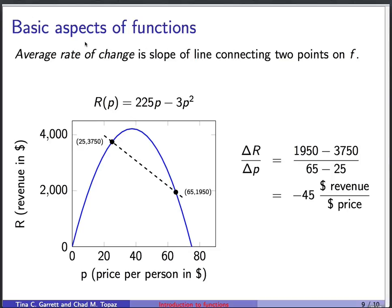Another useful piece of terminology is the average rate of change. And the average rate of change is just the slope of the line connecting two points on f. We'll do a quick demonstration here with this revenue function. And I just chose two points on the graph. Here, the price is 25 and the revenue is 3750. Here, the price is 65 and the revenue is 1950. We can ask about the average rate of change as we change the price from 25 to 65. So we can imagine a line connecting these two points. We can ask about the slope of that line. And it's the change in the r values, which is 1950 minus 3750, divided by the change in the p values, which is 65 minus 25. And if we work that out, that's negative $45 in revenue per each dollar in price.